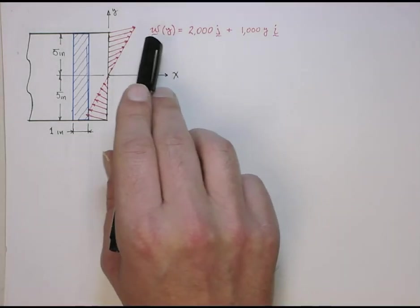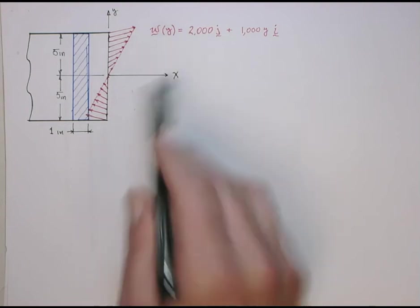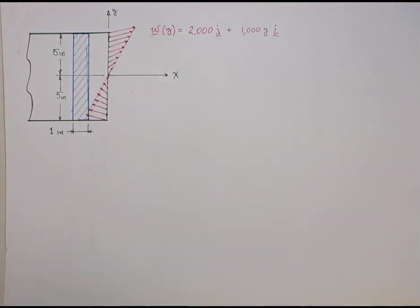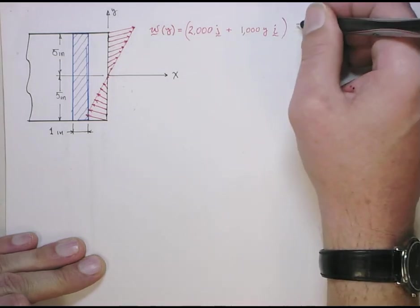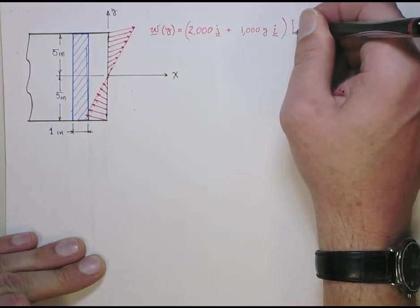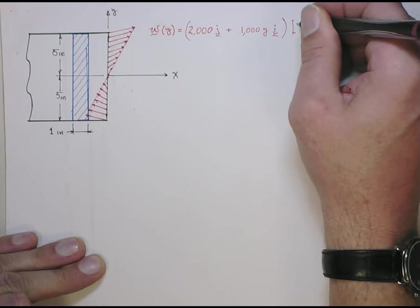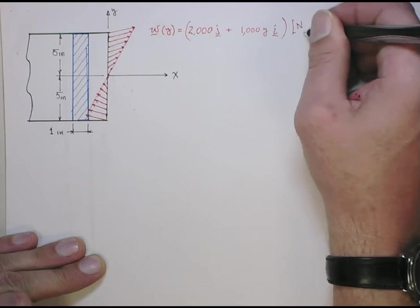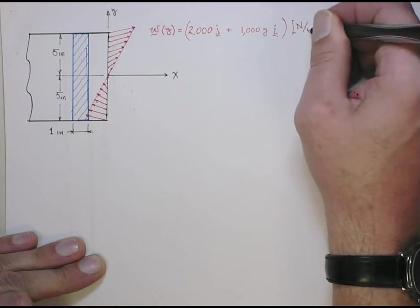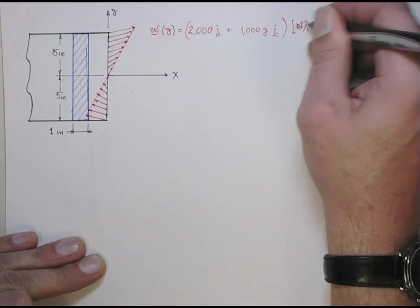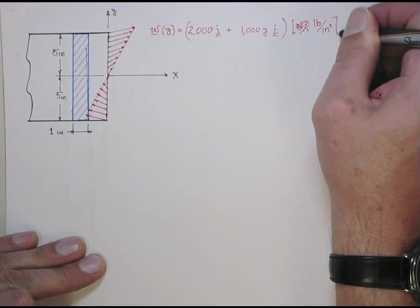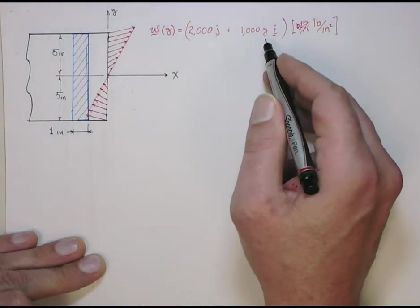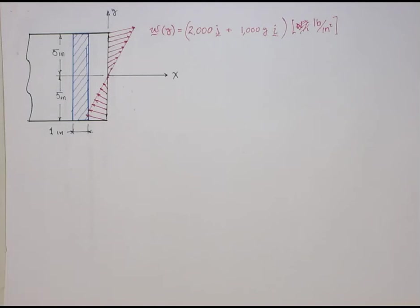So here I'm giving W. This is a distributed load. It has units, I should probably put the units on here. This has units of, I'm sorry, we're doing inches, forget this. Let's do it pounds per inch squared. So if you put in inches here for y, you'll get units of pounds per inch squared.